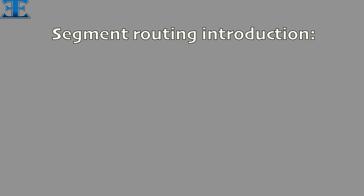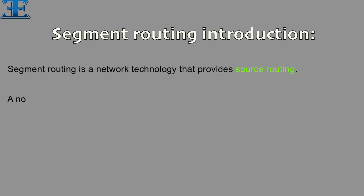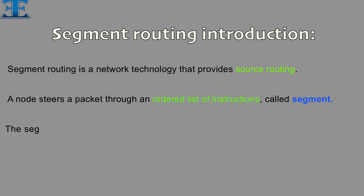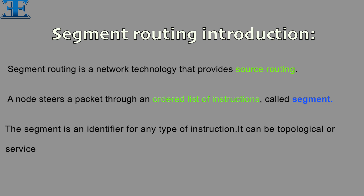Segment Routing introduction. Segment Routing is a network technology that provides source routing. A node steers a packet through an ordered list of instructions called segments. The segment is an identifier for any type of instruction. It can be topological or service-based.